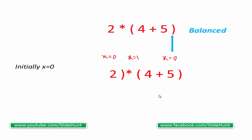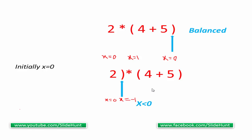Let's see another example with a different expression. We start scanning from the left with x equal to zero. We immediately encounter a closing parenthesis, so we decrement x by one — now x equals minus one. Since x is less than zero, we no longer need to scan the expression further; we stop here and the expression is unbalanced.